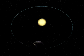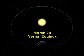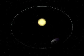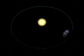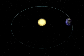Three months later, we reach the vernal equinox, the other date during the year when day and night length are equal. We complete our year-long circuit around the Sun with the beginning of another season.